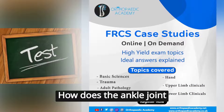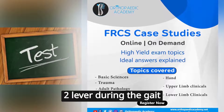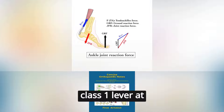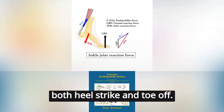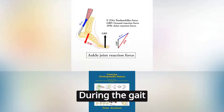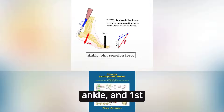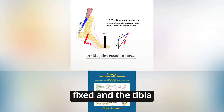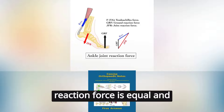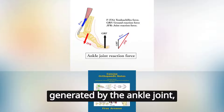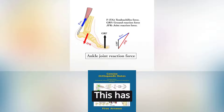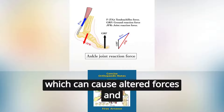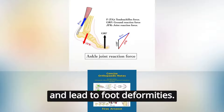How does the ankle joint act as a class 1 and class 2 lever during the gait cycle and what are the implications of this? The ankle joint acts as a class 1 lever at mid stance and a class 2 lever at both heel strike and toe off. During the gait cycle, the heel, ankle, and first MTPJ all serve as fulcrums, with the foot typically fixed and the tibia mobile. The ground reaction force is equal and opposite to the force generated by the ankle joint, which is transmitted up the leg. This has implications for conditions such as equinus, which can cause altered forces and moments at the ankle joint and lead to foot deformities.